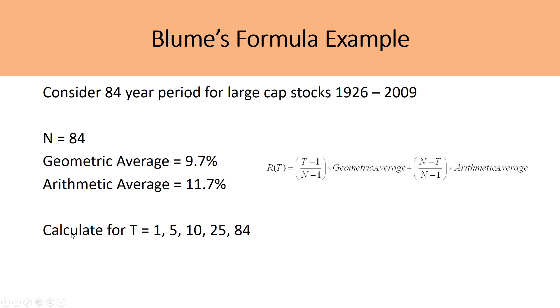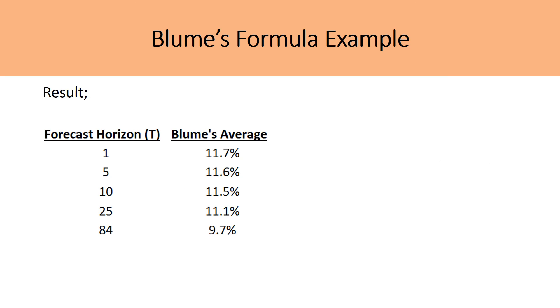So let's take a look at an example using the Blume's formula. So if we were to consider the large cap stock performance between 1926 and 2009, the geometric average would be 9.7%, while the arithmetic average would be 11.7%. And N would be 84 because that is that 84-year period. So if we were to calculate for T equals 1, 5, 10, 25, and 84, and we plug in those necessary values, the result would be for forecast horizon of one, we'd get a Blume's average of 11.7%. For a forecast horizon of 10, we'd get 11.5% as a Blume's average.